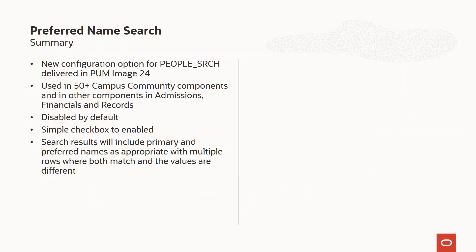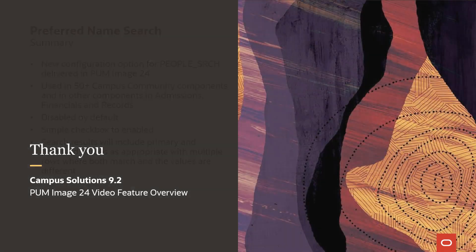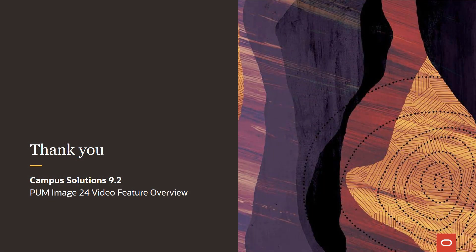In summary, in PUM Image 24, the existing people search used across Campus Solutions is enhanced to include preferred names. The configuration is optional with a simple checkbox to enable the feature. Once enabled, you can find people by matching to their preferred name as well as their primary name. This concludes the video feature overview. Thank you for joining us.